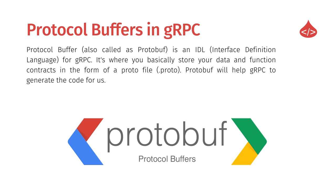Protocol Buffers, also called proto buff, is an ideal interface definition language for gRPC. It's where you basically store your data and function contracts in the form of a proto file — the file extension is .proto. As mentioned, we define the request and response of the gRPC service in this proto file, and proto buff helps gRPC generate the code for us automatically.